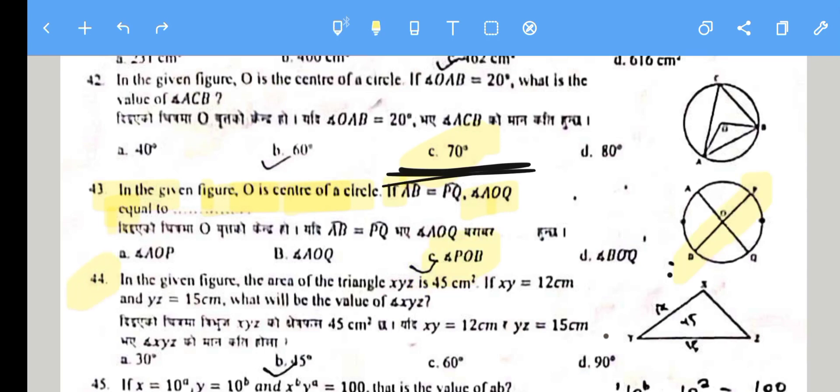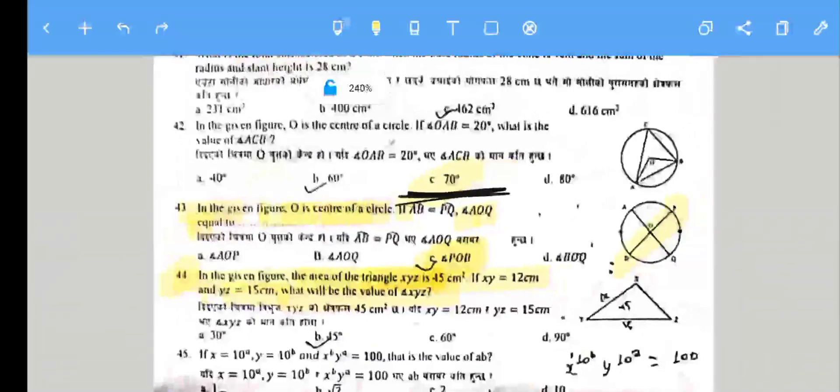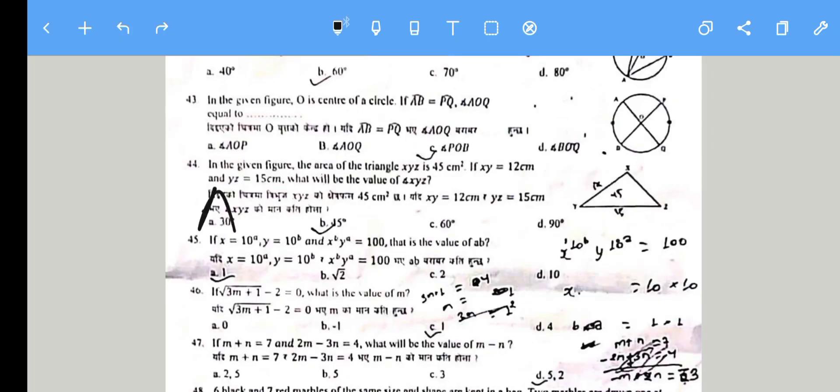Question 44: In the given figure, the area of triangle XYZ is 45 cm² with XY = 12 cm and YZ = 15 cm. What will be angle XYZ?